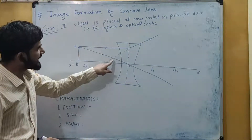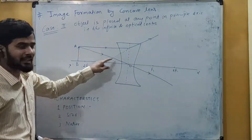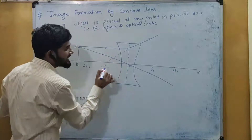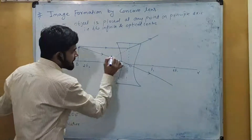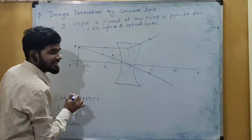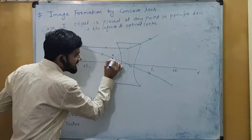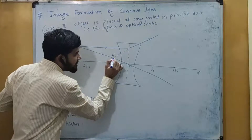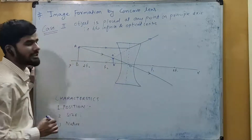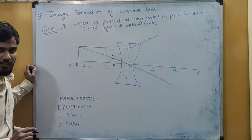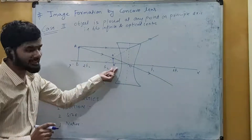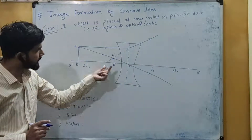Here you can see that at this point these two light rays appear to meet. We name this point A', and the other point on the principal axis is B'. So this is the object AB and this is the image A'B'. The image is formed on the same side as that of the object, and whenever that happens, the image will be virtual and erect.